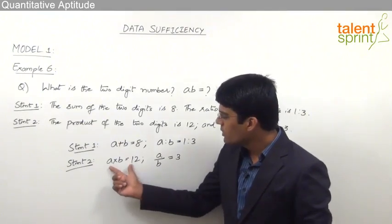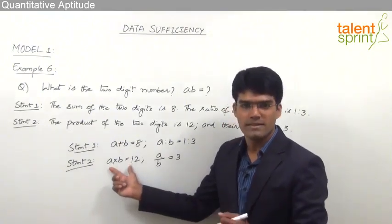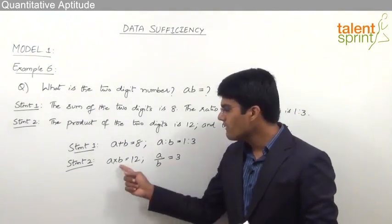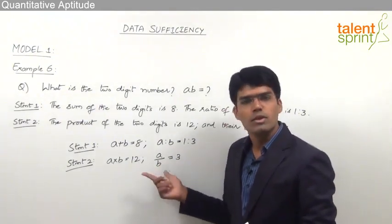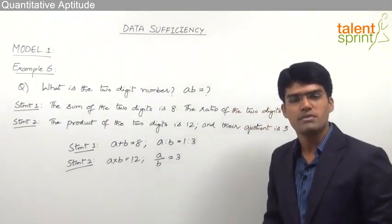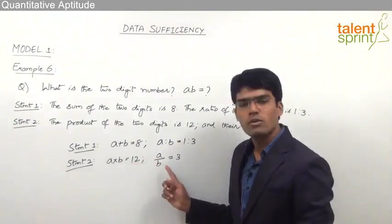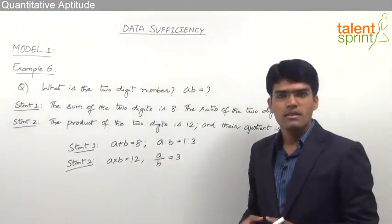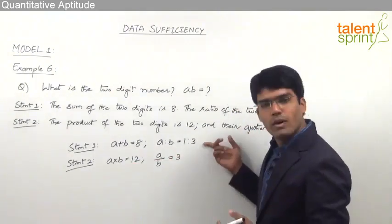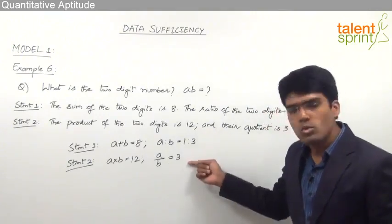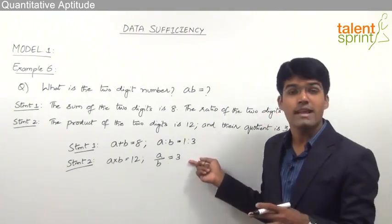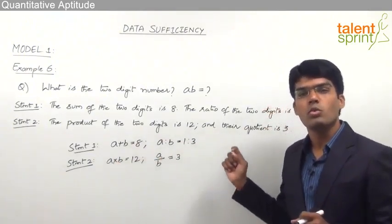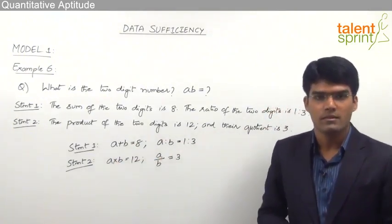Similarly, looking at Statement 2: A into B equals 12 is the first equation, and A by B equals 3 is the second equation. Again we have two equations and two variables, which can be solved to find A and B and then the two-digit number. So it seems Statement 1 alone can give the answer and Statement 2 alone as well can give the answer, suggesting the answer is option 3.